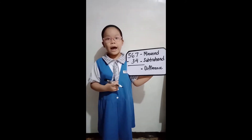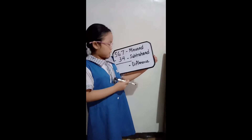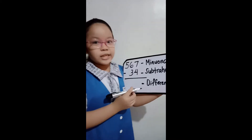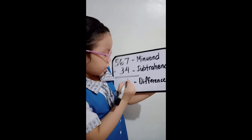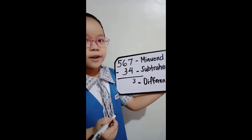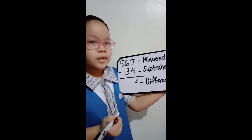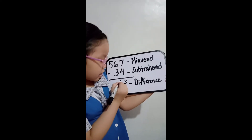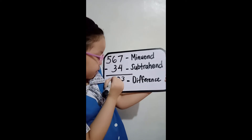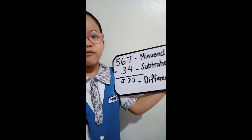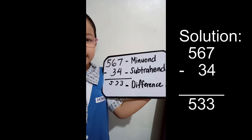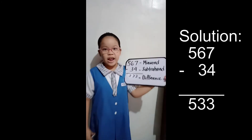Let's now solve the problem. 7 minus 4 equals 3. Let's put 3 here. 6 minus 3 equals 3. Let's put 3 here. Then bring down 5. We have the answer.